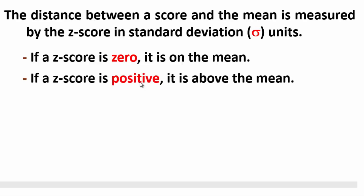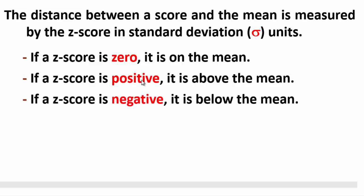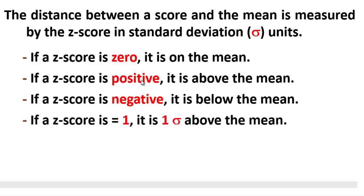If z score is zero, it's on the mean. If z score is positive, it's above the mean — فالقيمة التي حولناها إلى z score أكبر من المتوسط الحسابي. If z score is negative, it's below the mean — وإن كانت سالبة فهي أصغر من المتوسط الحسابي. If z score is equal to one, it is one sigma above the mean.